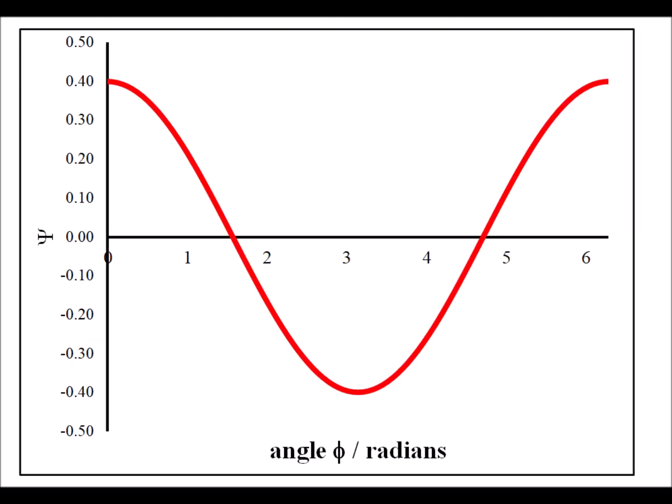So now for m sub l equals one, we're just plotting the real part of the wave function. And we notice that in this particular case, the real part of the wave function has two nodes. We know our general idea is that the greater the number of nodes, the higher the kinetic energy that's involved.